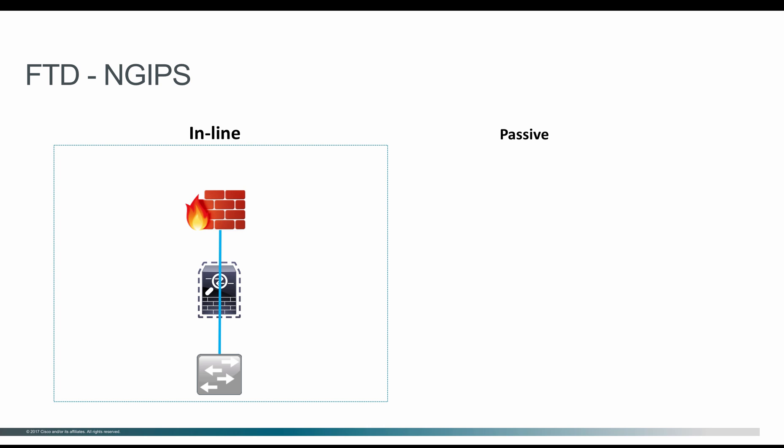When you deploy the next-gen IPS in inline mode, the FTD sits directly on the path of the packet. A typical deployment would be either behind the firewall or between the firewall and the router. It always has two interfaces — one for ingress and one for egress — and we pair these interfaces to make it inline.